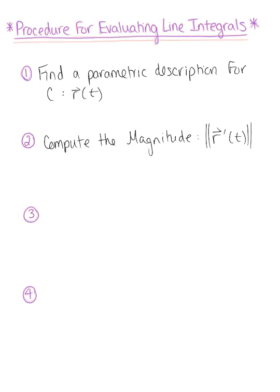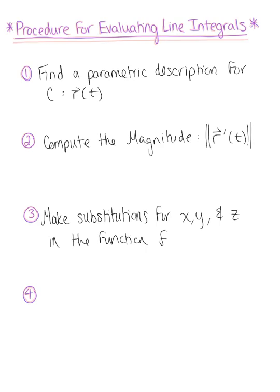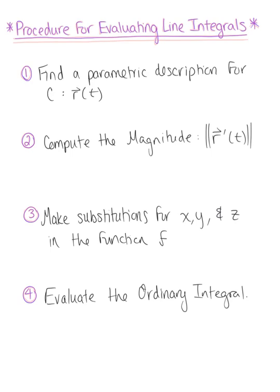Once you have the parametric description of the curve and you've computed the magnitude of the tangent vector, you're ready to make substitutions for x, y, and z in the function f. Replace any arc length parameters or any x, y, and z variables with the arbitrary parameter t. Now with the parametric description, the magnitude of the tangent vector, and the function set up, you are ready to evaluate the ordinary line integral. Once all of these substitutions have been made, you end up with an ordinary integral that you're ready to evaluate.